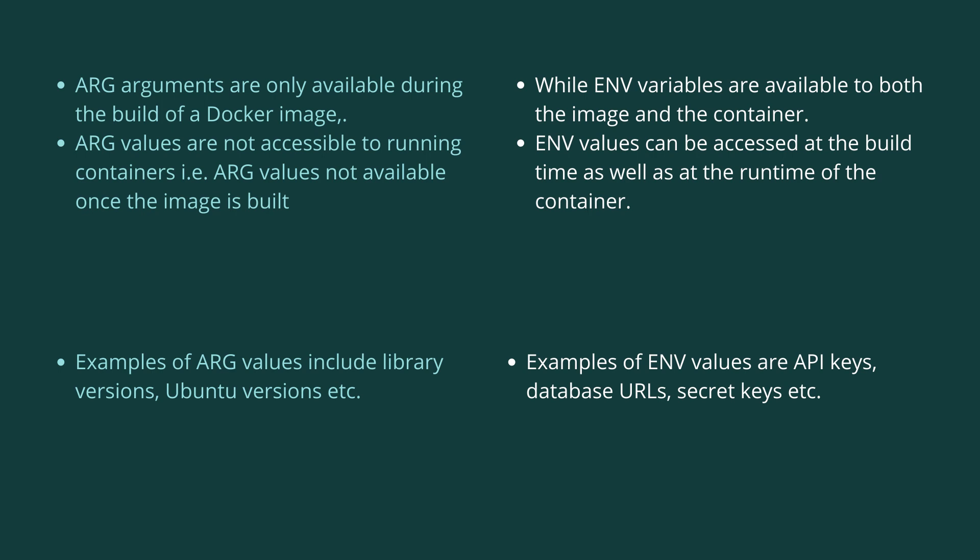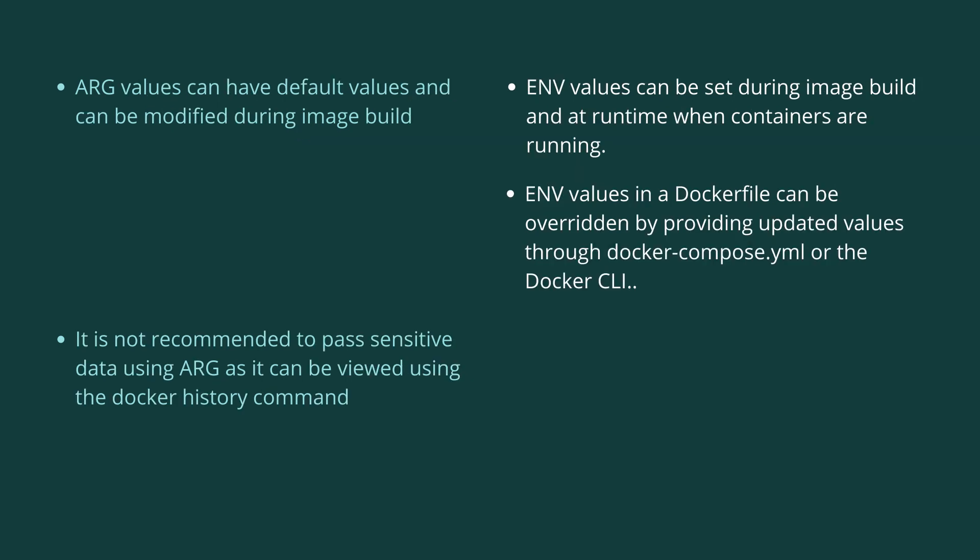Examples of ARG values are library versions, Ubuntu versions, etc., whereas examples of ENV values are API keys, database URLs, etc. ARG values can have default values and can be modified during the image build, whereas ENV values can be set during the image build as well as at the runtime of the container.